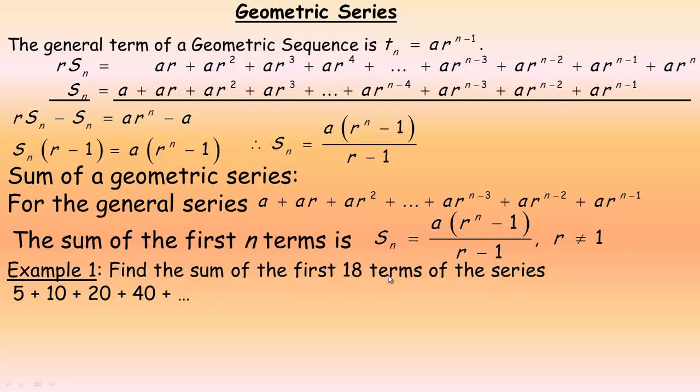So, in the first example, we're asked to find the sum of the first 18 terms of this series, 5 plus 10 plus 20 plus 40. So, the first thing you should do is identify a, r, and n. So, a would be 5. The common ratio is 2, because you're multiplying by 2 to get the next term each time. And if it's the sum of the first 18 terms, then n would be 18.